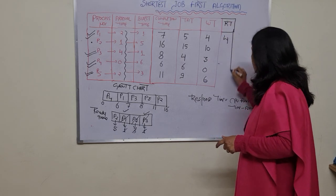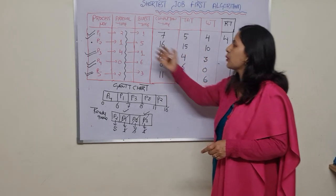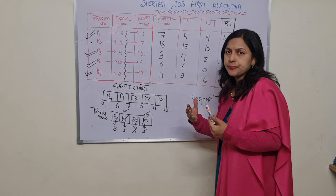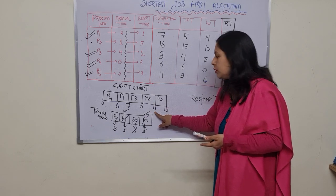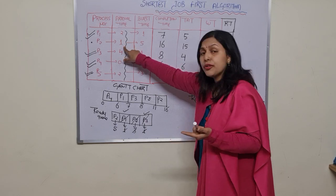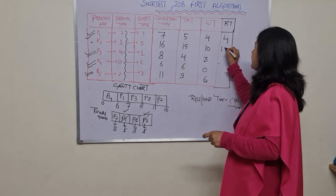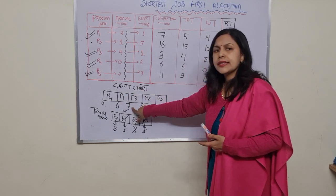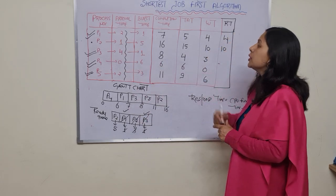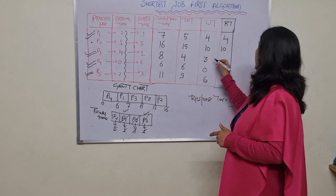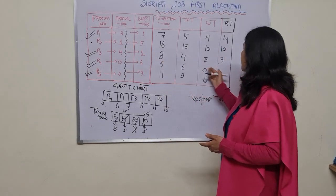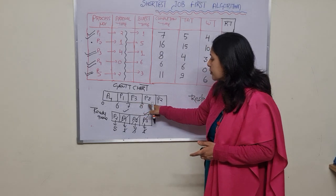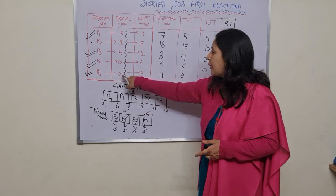Now calculating response time for all processes from the Gantt chart: P2 was first allocated CPU at 11, arrival time 1, so response time = 11 − 1 = 10. P3 was first allocated at 7, arrival time 4, so response time = 7 − 4 = 3. P4 was allocated at 0, arrival time 0, so response time = 0 − 0 = 0. P5 was first allocated at 8, arrival time 2, so response time = 8 − 2 = 6.